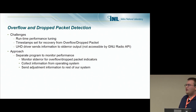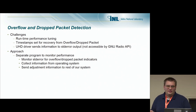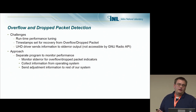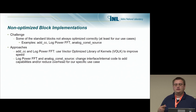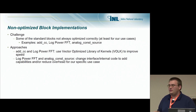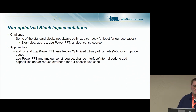Another challenge was that several blocks weren't optimized for our use case — for example, the add CC, log power FFT, and analog constant source blocks. For add CC and log power FFT, we used Volk and reduced overhead to improve speed. For log power FFT and analog constant source, we changed the interface and internal code to add capabilities we wanted and further reduce overhead.